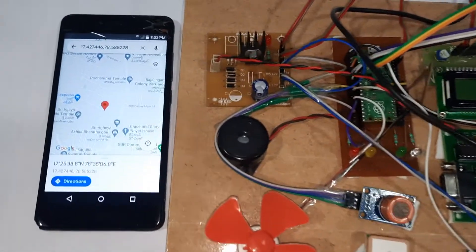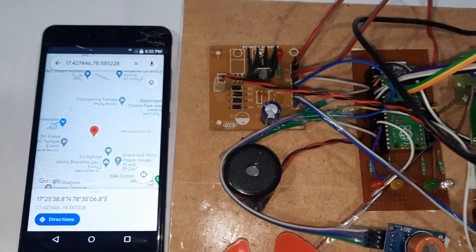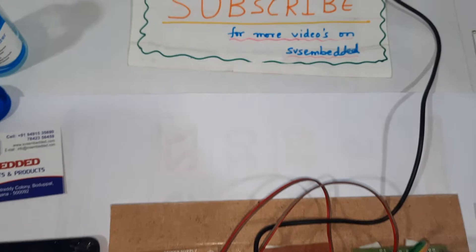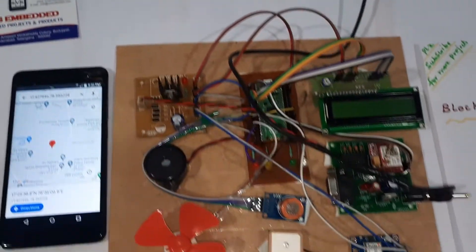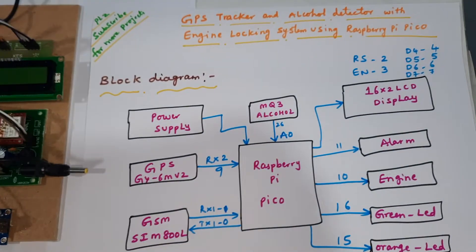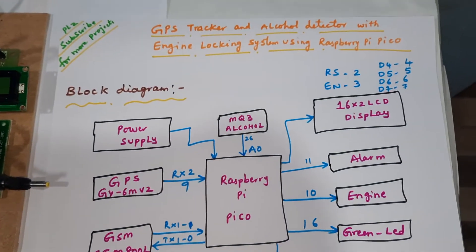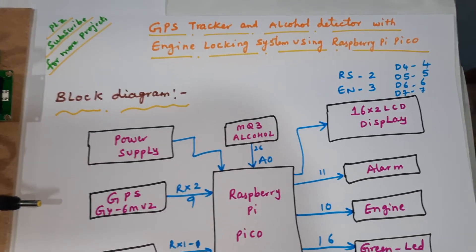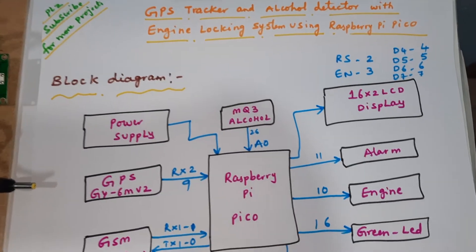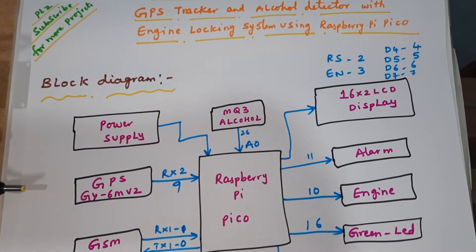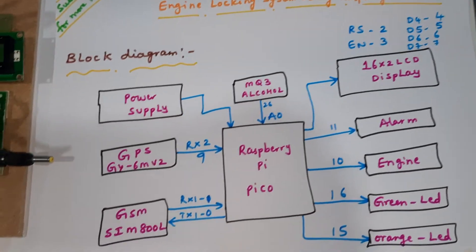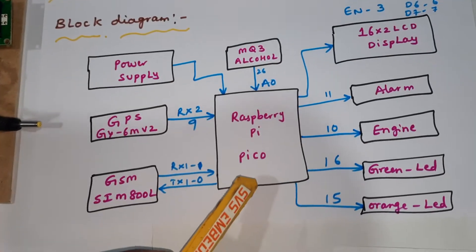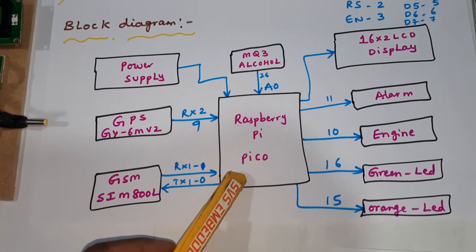Hi, we are from SVS Embedded. The project title is GPS Tracker and Alcohol Detection with Engine Locking System using Raspberry Pi Pico.